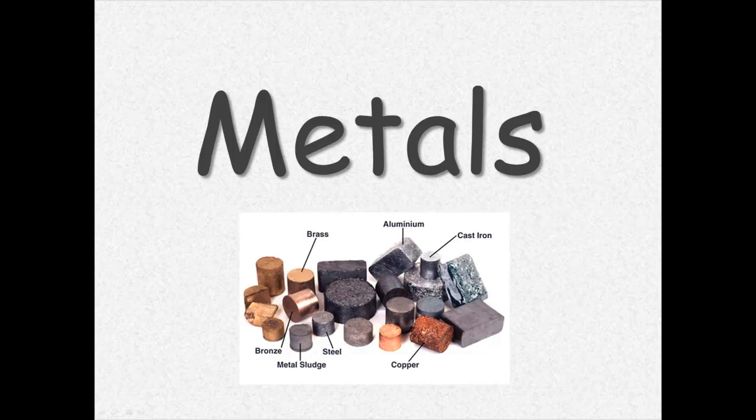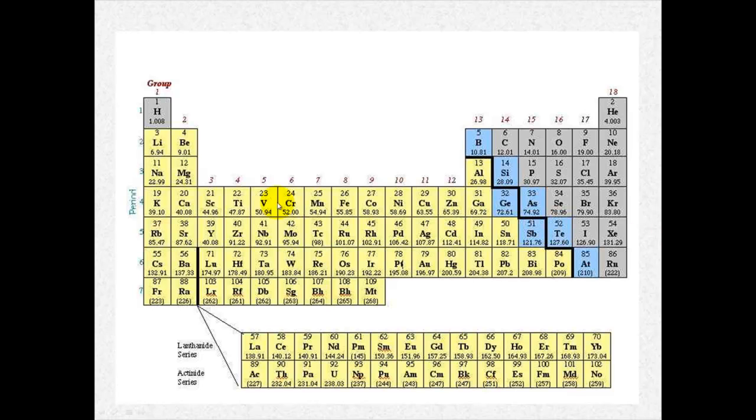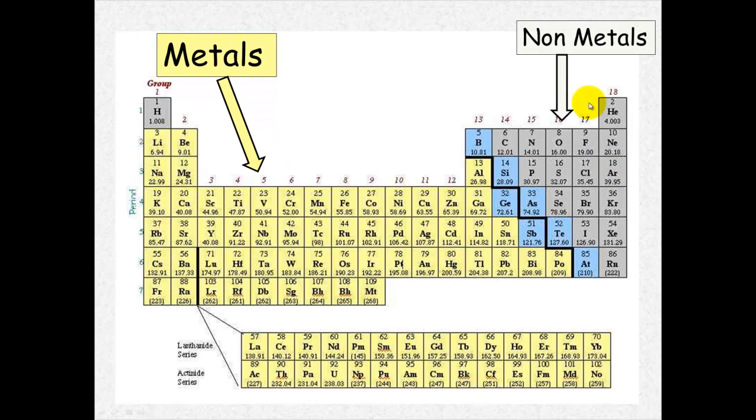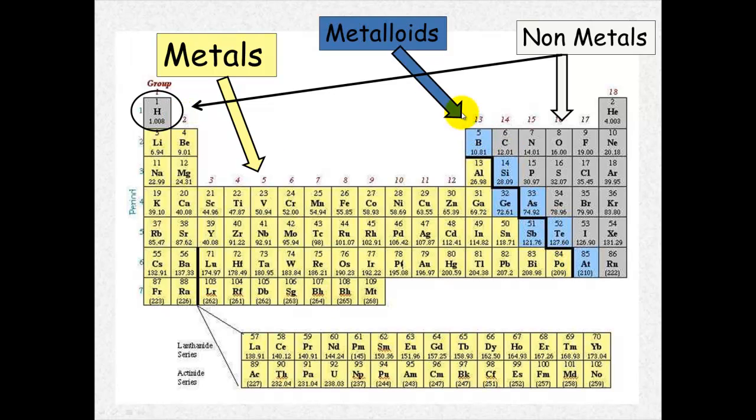Metals. When you look at the periodic table you'll notice that the majority of elements are metals and these are all the ones in the yellow. The ones in the grey over here on the right hand side are the non-metals and don't forget hydrogen in group 1 is also a non-metal. On the staircase here separating the metals and the non-metals we have the metalloids.